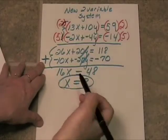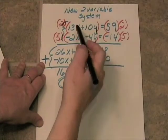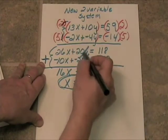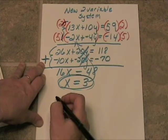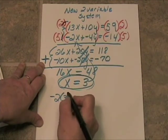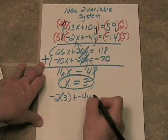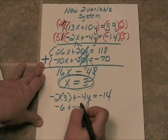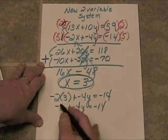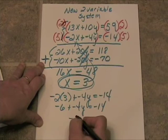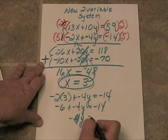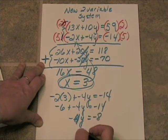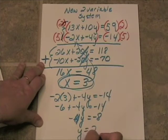Now I'm going to take this value of x and plug it into either one of the original two equations. I like this one better, so I'll plug it in there. I'll get negative 2 times positive 3 plus negative 4 times y is equal to negative 14. That's negative 6 plus negative 4y equals negative 14. We'll add 6 to both sides — we'll get negative 4y equals negative 8. Divide through by negative 4 and you get y equals 2.